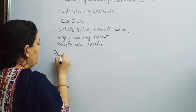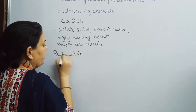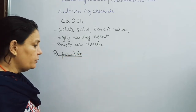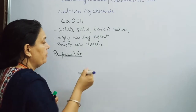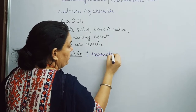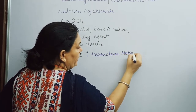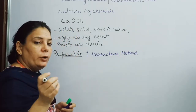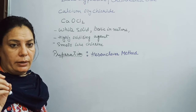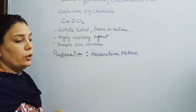Now, the preparation of Bleaching Powder. It is prepared in the laboratory by the process of the Hazan-Clever method. In this method, when chlorine gas is passed through dry slaked lime, there is formation of Calcium Oxychloride.